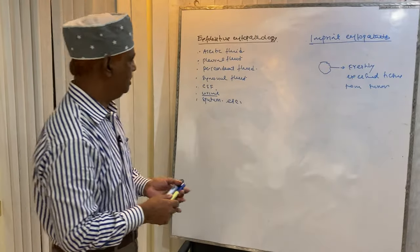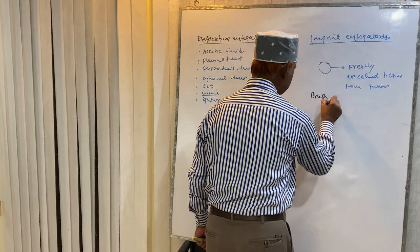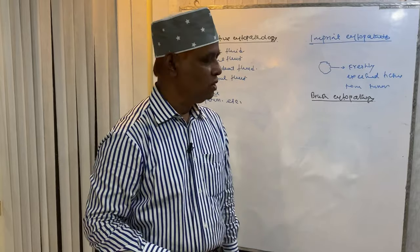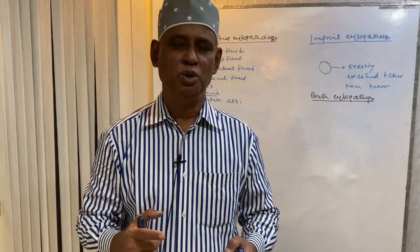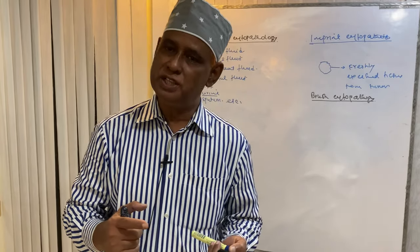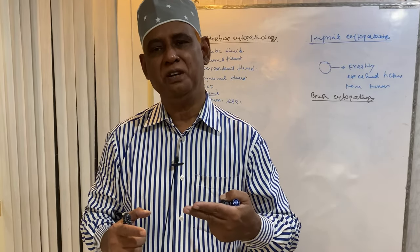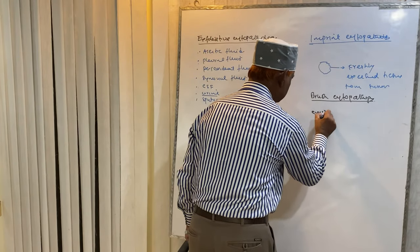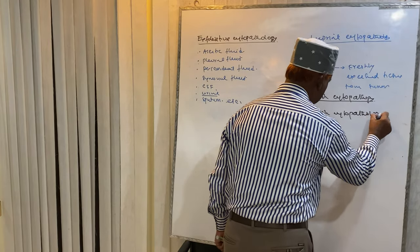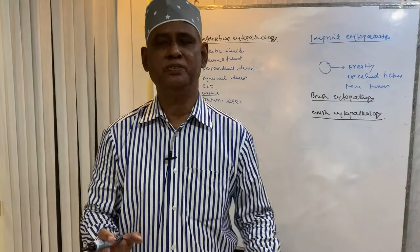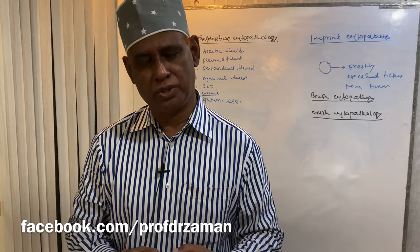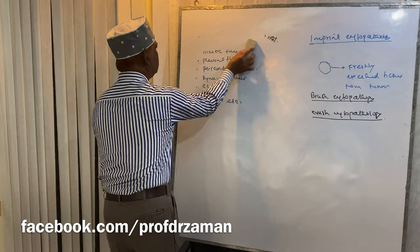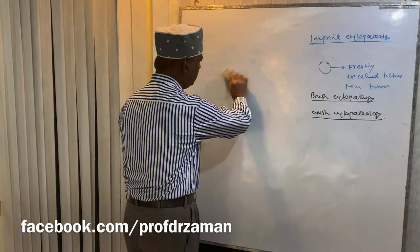Now come to brush cytopathology. By using a fine brush, we can take cells from any ulcer onto a slide. Then it is fixed in fixative, stained, and seen under microscope to identify any anaplastic cell. This is brush cytopathology. When the tissue is very much friable, crush cytopathology is used. This is all about the cytopathology for diagnosis of tumor.